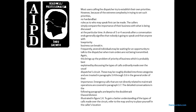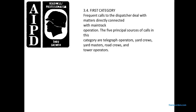In the general order of importance: emergency calls that are not directly related to main track operation are covered in paragraph 3-7. The details of conversations in the following paragraphs are keyed to the double-track Elwood division illustrated in Figure 1-4. For better understanding of the type of calls made over the circuit, refer to the map and try to place yourself in the caller's location.